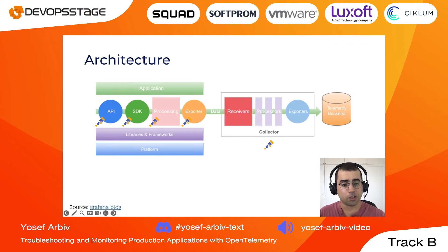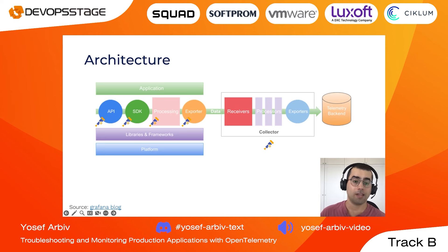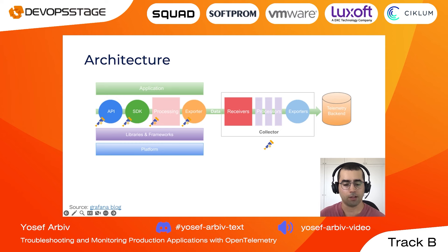This is a typical architecture of an application using OpenTelemetry. We have the OpenTelemetry SDKs running as part of our application, and we can also have processors and exporters running as part of or beside our application. Then we can have the OpenTelemetry Collector that collects data from all of our different services, processes it, and exports the data to the backend. The backend is not part of OpenTelemetry — OpenTelemetry deals with generation, collection, and exportation of telemetry data to any backend we are using.